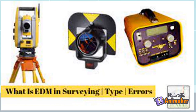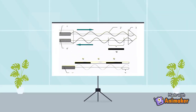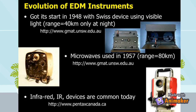EDM can be used for the measurement of horizontal and vertical angles and distances. They can automatically measure and record the information. The EDM uses electromagnetic waves, and the type of waves generated depends on various factors such as frequency, wavelength, and period. Based on the electromagnetic waves used in the EDM, they are classified into three types.